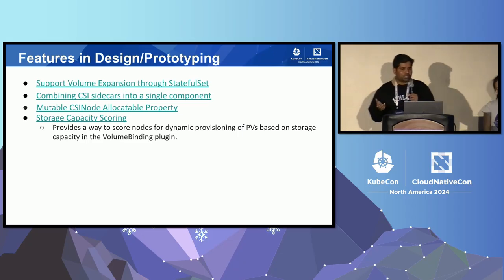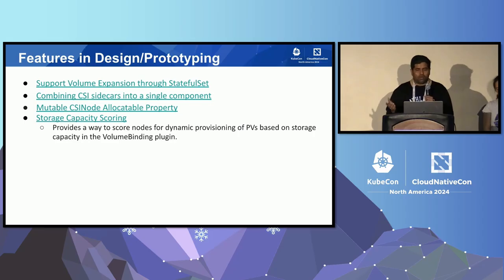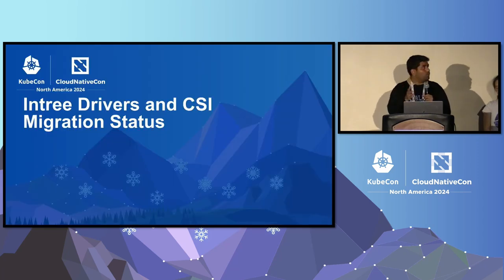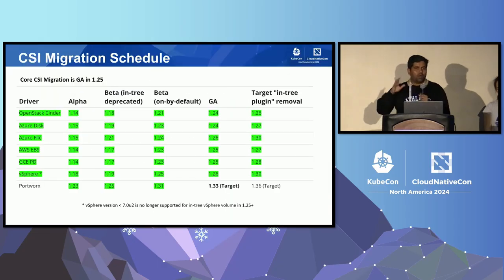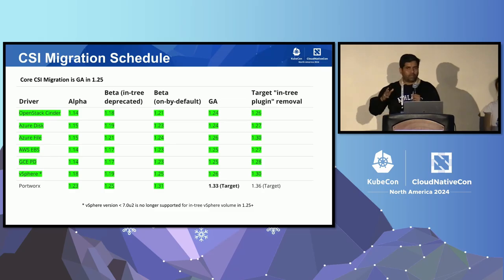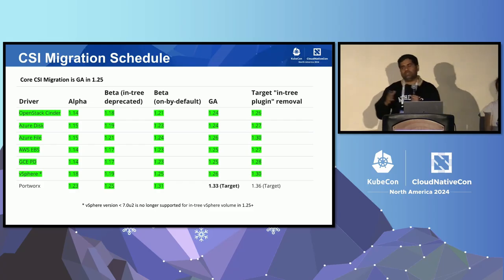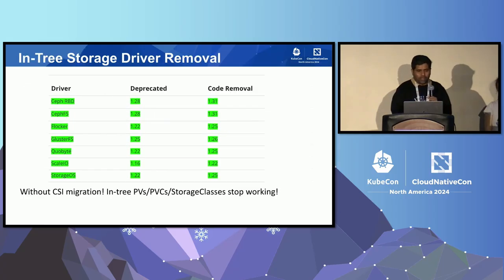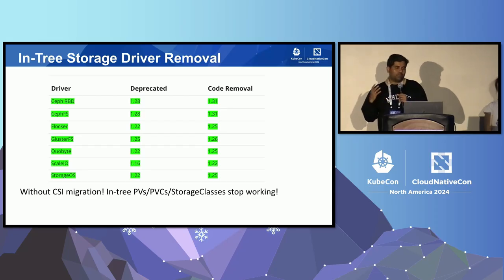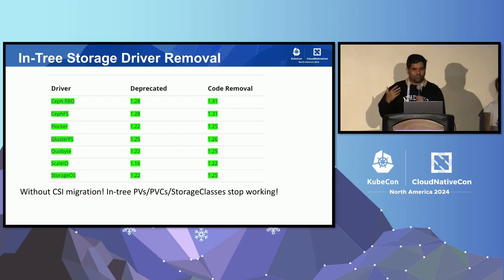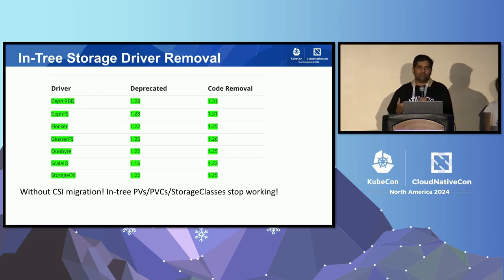We are also working on storage capacity scoring, which allows you to score nodes based on available storage capacity for PVC-based scheduling. Regarding in-tree to CSI migration: most cloud provider-based drivers have been migrated to CSI. We are hoping to migrate the Portworx driver from in-tree to CSI in 1.33. As all storage vendors and users are using CSI more and more, we are seeing less use of in-tree drivers, so we are in the process of deprecating and removing the in-tree storage drivers.